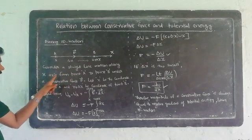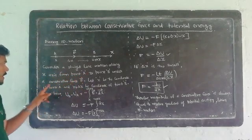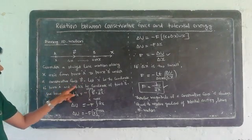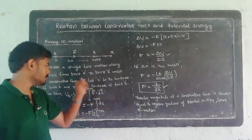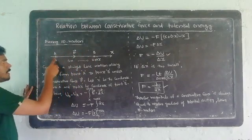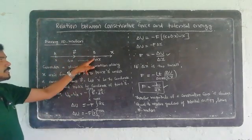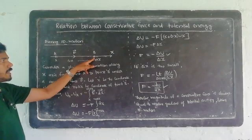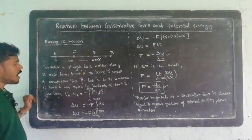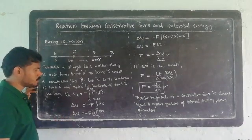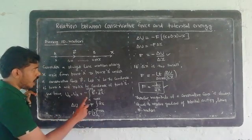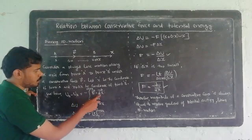Consider motion along the x-axis from point A to point B under a conservative force F. Let xA be the coordinate of point A and x plus delta x be the coordinate of point B. The potential energy difference between these two points, UB minus UA, is equal to minus the integral from rA to rB of F dot dr. We have a three-dimensional space, so UB minus UA equals minus integral from rA to rB of F dot dr.